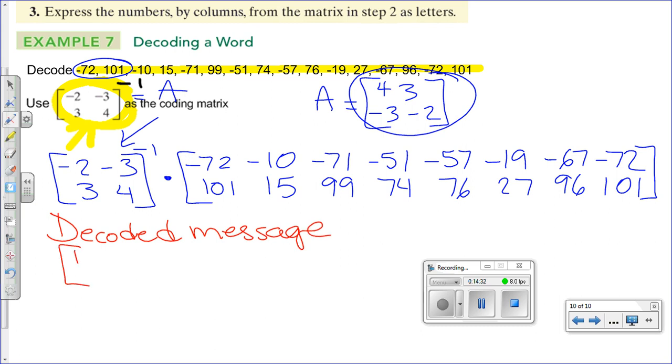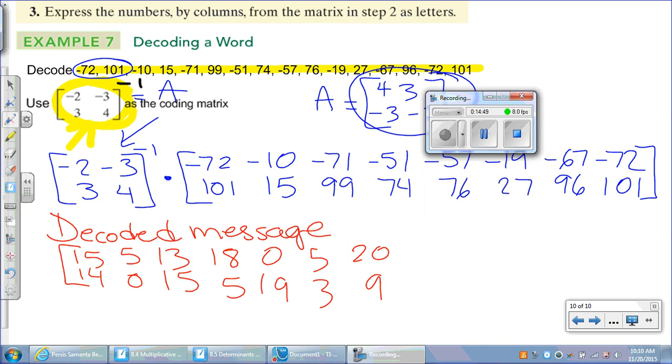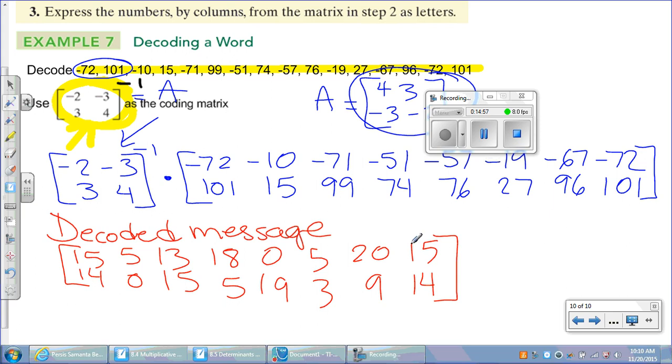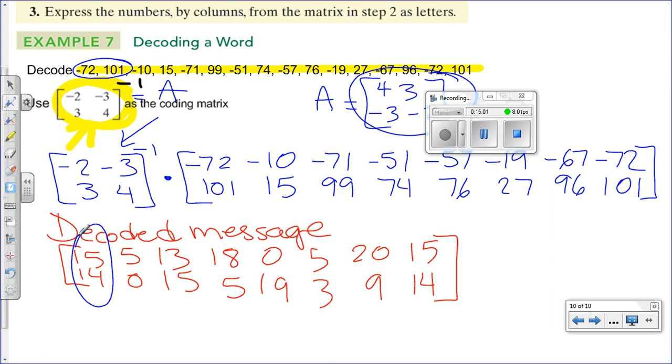I have 15, 14, 5, 0, 13, 15, 18, 5, 0, 19, 5, 3, 20, 9, 15, and 14. Now, what you need to do, because my math book, or this book in particular, they go by columns, you start decoding. Letter 15 represents O, letter 14 represents N, and then you move to the second column. Number 5 represents E, I'm sorry, and then number 0 represents space, and then 13 represents M, and so on. You are now finished decoding.